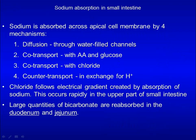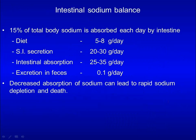Note that large quantities of bicarbonate are absorbed in the duodenum and jejunum. Every day, the diet provides about 5 to 8 grams of sodium chloride, while the small intestine secretes 20 to 30 grams per day but absorbs 25 to 35 grams per day, with only a small amount excreted. Decreased absorption of sodium can lead to rapid sodium depletion and death.